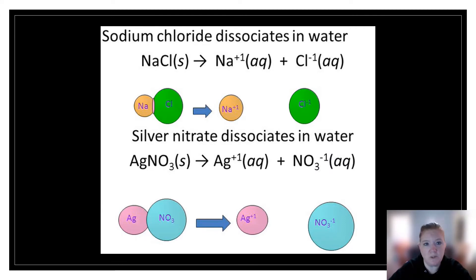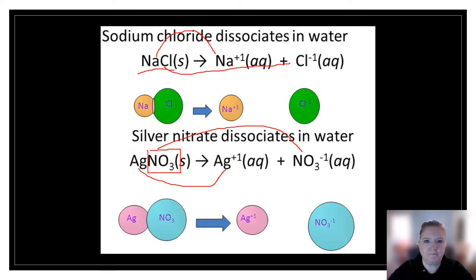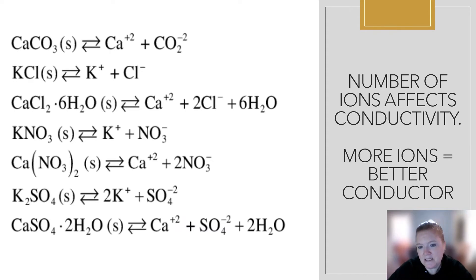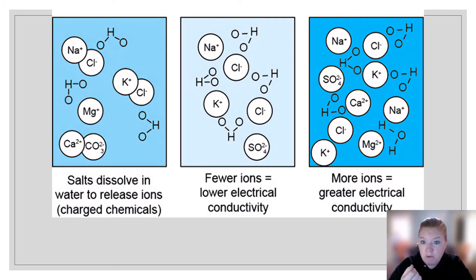Pure water does not conduct electricity, but tap water does. Sodium chloride dissociates in water into Na⁺ and Cl⁻ ions. Silver nitrate dissociates into the Ag⁺ ion and the NO₃⁻ ion from Table E. The number of ions does affect conductivity — more ions means a better conductor. Salts that dissolve release ions: fewer ions means less conductivity, more ions means more conductivity. One way to increase conductivity is to add more solute.